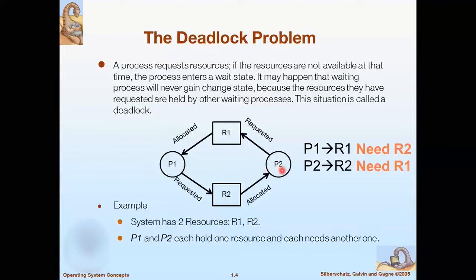So finally we can summarize the concept: in a multiprogramming system, a number of processes compete for a limited number of resources. If a resource is not available at that instance, the process enters a waiting state. If a process is unable to change its waiting state indefinitely because the resources requested by it are held by another waiting process, then the system is said to be in deadlock.